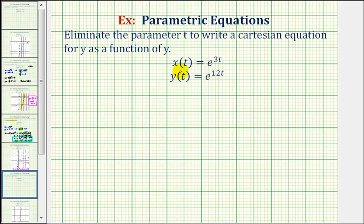So for the first step, let's rewrite the parametric equations as x equals e to the power of three t, and y equals e to the power of 12 t.